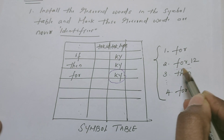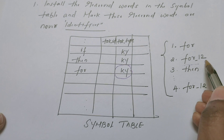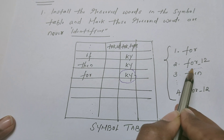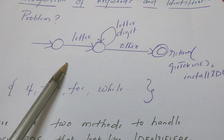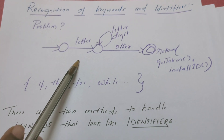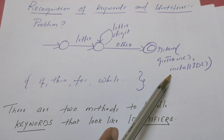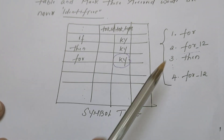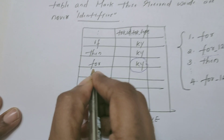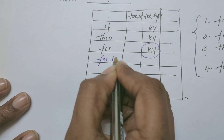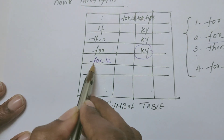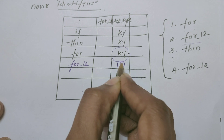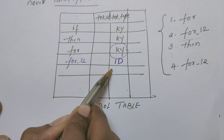Now let us check the next example: FOR_12. It is an identifier, not a keyword. This lexeme is also recognized by the same transition diagram. It tries to install FOR_12 into the symbol table. Since FOR_12 is not already there, it will be installed as an identifier, and its ID will be written as an attribute value.